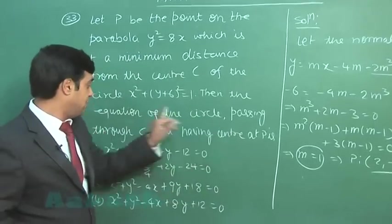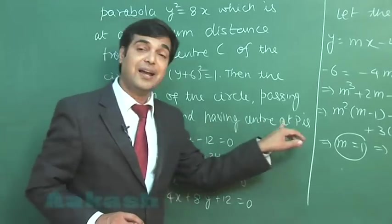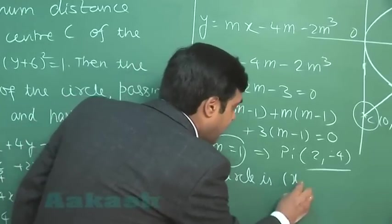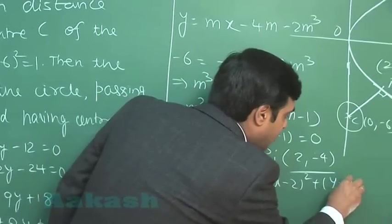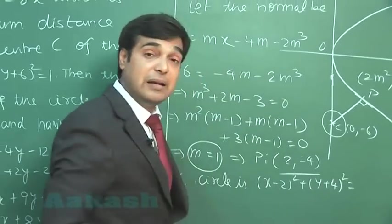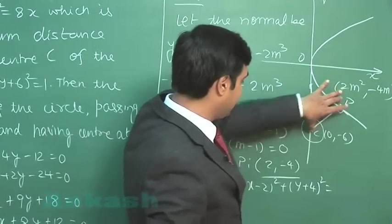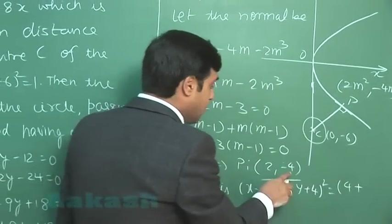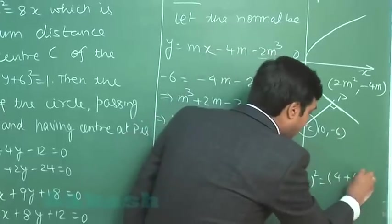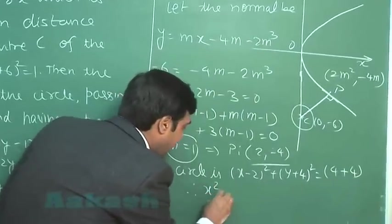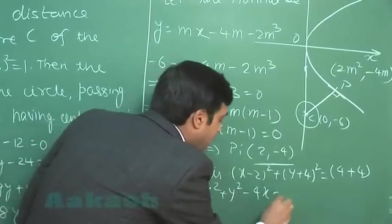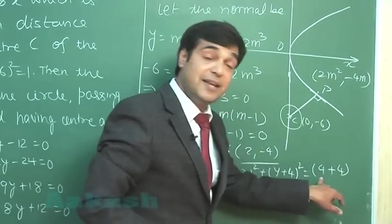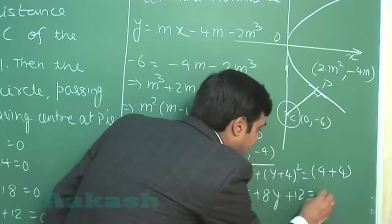Now let us come to the question part again. It is being asked find the equation of the circle passing through C and having center at P. So clearly the equation of the circle is (x minus 2) whole squared plus (y plus 4) whole squared equals the radius. That is the distance between these two points. So it is (2 minus 0) that squared, that is 4, (-4 plus 6) whole squared, that is again 4. So simplifying, we have x squared plus y squared minus 4x plus 8y. Here on LHS we have 20, RHS we have 8, so it is plus 12 equals 0.